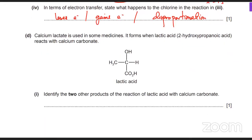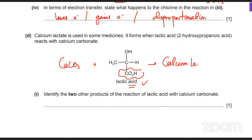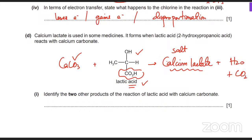There's an organic question about lactic acid reacting with calcium carbonate to form calcium lactate. What are the other two products? A carbonate reacting with an acid produces a salt plus carbon dioxide and water.